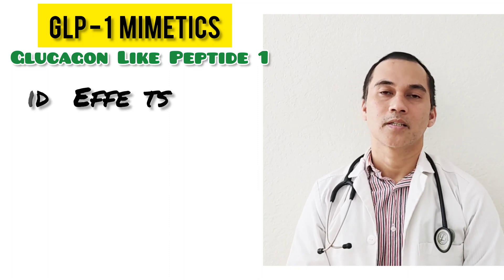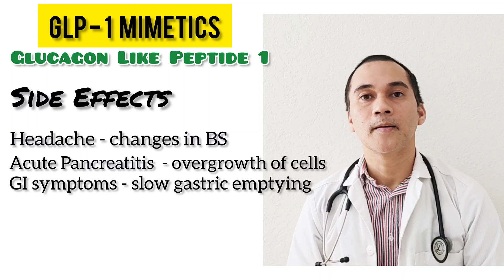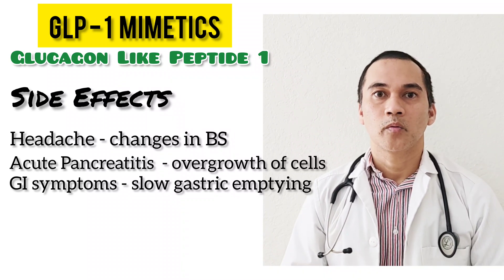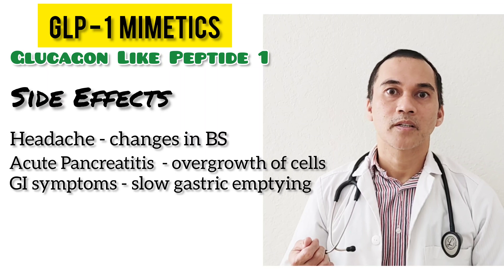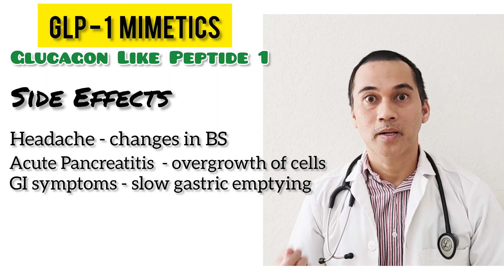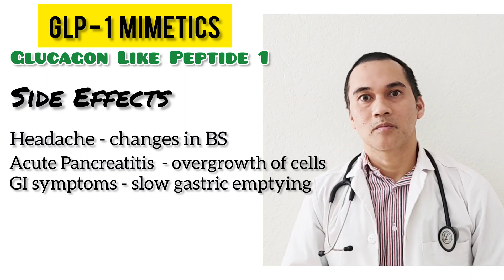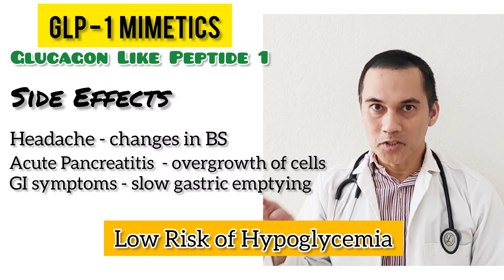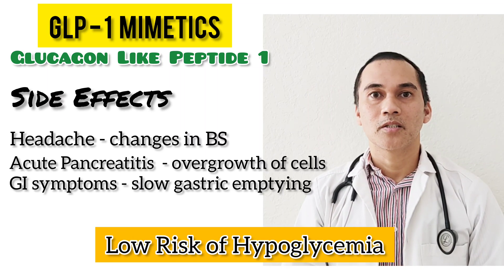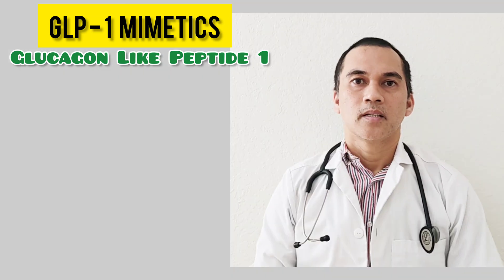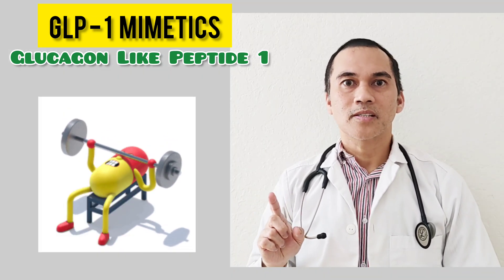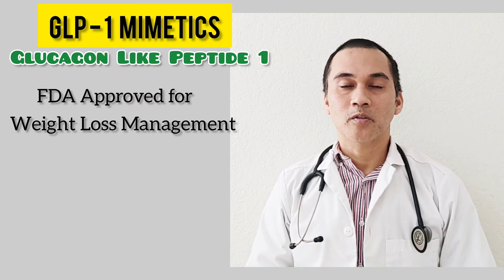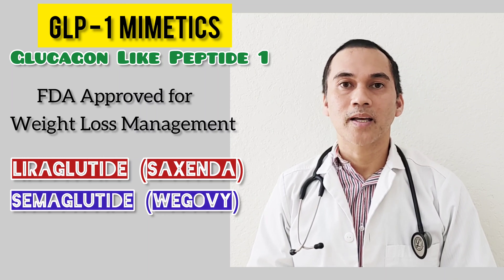What are the side effects of these medications? We have headache because of changes in blood sugar level, and acute pancreatitis — because the longer GLP-1 stays, it can cause overgrowth of cells covering the small ducts of the pancreas, causing acute pancreatitis. There are also GI symptoms because it slows down gastric emptying. Because insulin is released in response to a meal, this medication has a low risk of hypoglycemia. Two of these GLP-1 mimetics are now FDA approved for weight loss management: liraglutide as Saxenda and semaglutide as Wegovy.